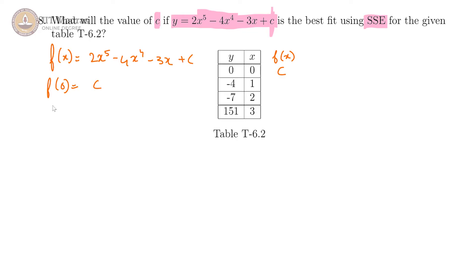f of 1 which is 2 minus 4 minus 3 plus c, that is equal to c minus 5.